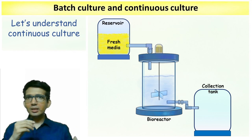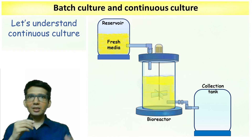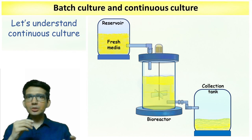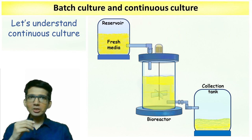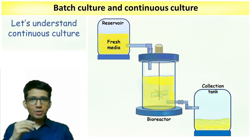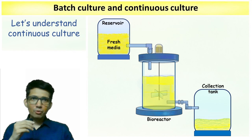In continuous culture, two things happen simultaneously: the continuous addition of fresh nutrients, and the continuous removal of old media and biomass. The term continuous culture means the growth of cells will occur in a continuous fashion and there will not be any stationary phase. The bioreactor is operated in a sterile environment throughout.